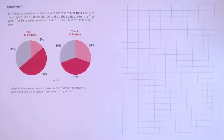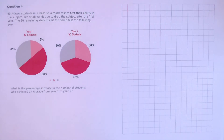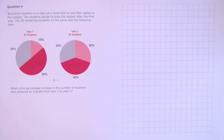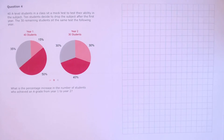Question 4. 40 A-level students in a class sit a mock test. 10 students decide to drop the subject after the first year. The 30 remaining students sit the same test the following year. What is the percentage increase in the number of students who achieved an A grade from year one to year two?